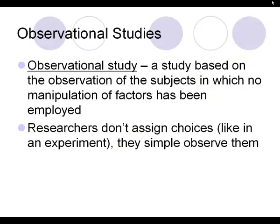First we're going to talk about the difference between an observational study and an experiment. In an observational study, you are strictly observing the choices that the subjects are making. You are not manipulating them or assigning them into groups where you're choosing for them — you're just observing the choices that they make.